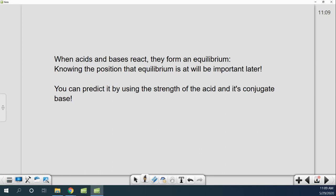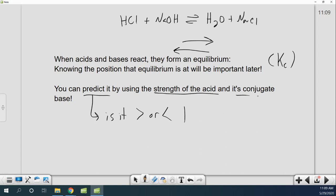Anyway, when acids and bases react, they form an equilibrium, right? We know all this. You put HCl plus NaOH. It's going to form some kind of equilibrium. In this case, I'd have water plus sodium chloride. Cool. Now, knowing the position this equilibrium is at is very important. Does this reaction tend to favor products? Or does it tend to favor things staying as reactants? Basically saying, what is Kc for this reaction? And without being told Kc, you can actually predict it. I mean, you can't get it down to even what the exponent is, but you'll know. So is it greater than or less than one? You'll be able to tell which side it favors just by looking at the strength of the acid and the strength of its conjugate base.